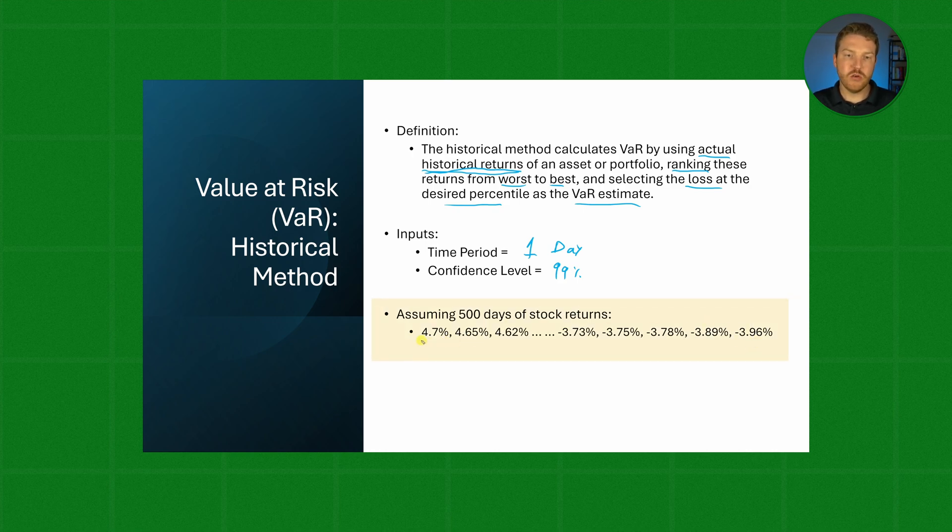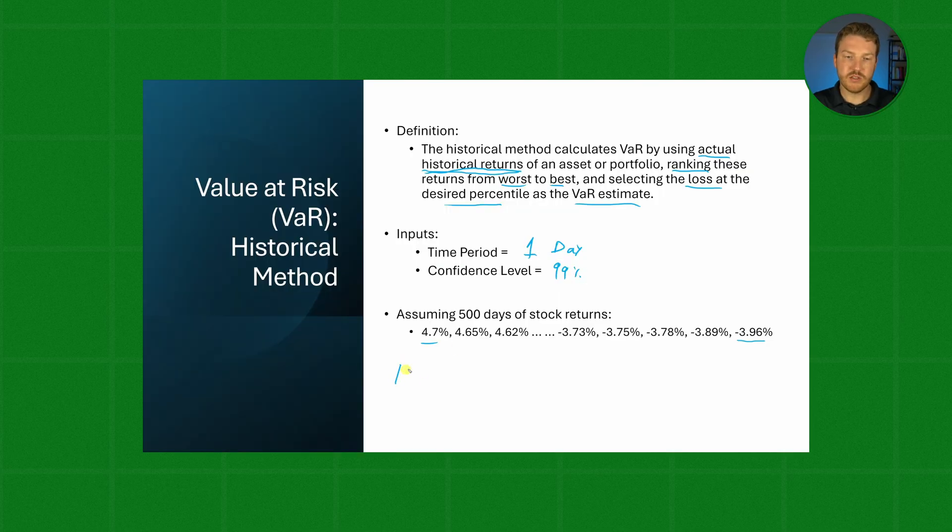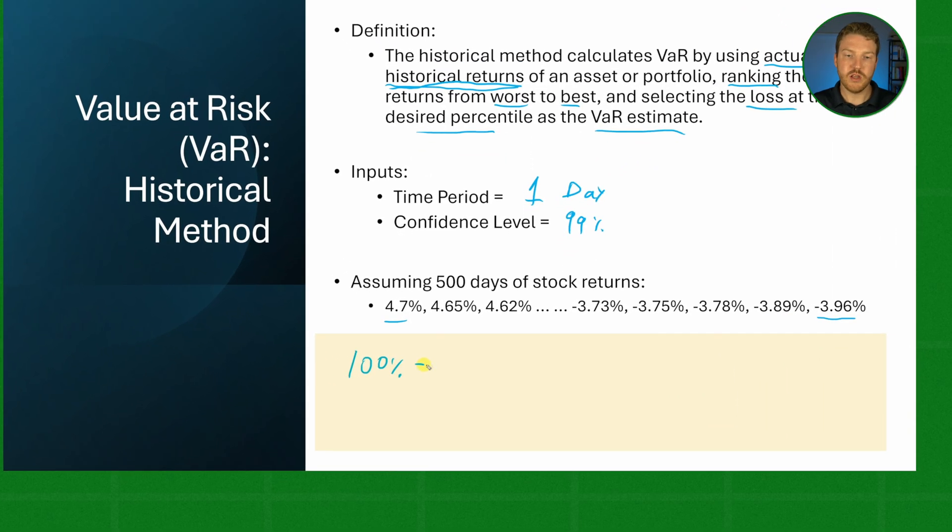Now the best one was 4.7%. The worst one was negative 3.96%, and we have hundreds in between these two. Now how would we calculate our VaR? Well we're looking for the 99th percentile confidence interval, right? So we can take 100% minus 99%, which will give us 1%. So we're really looking for the one percentile outcome.